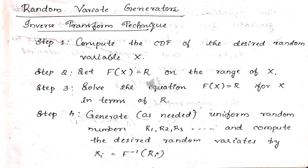The CDF can be represented based on several distributions, as shown in the previous slide. The inverse transform technique has four steps. In step 1, we compute the CDF — cumulative distribution function — based on what kind of distribution we are going to use and the variable x. In step 2, we set the function f(x) equal to r, on the range of x. In step 3, we solve the equation to find the value of x, which will be expressed in terms of r, so x equals some value in terms of r.